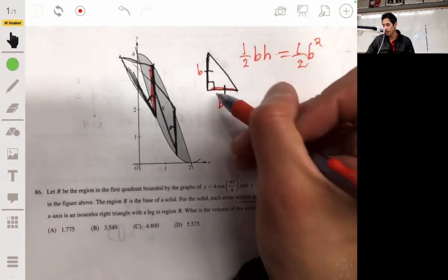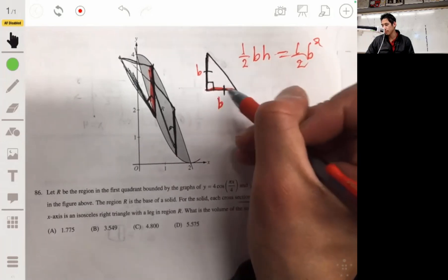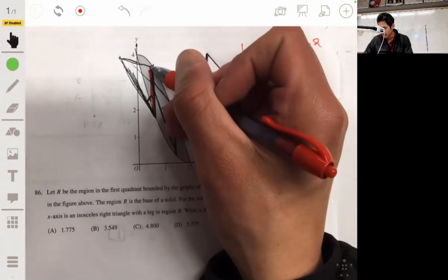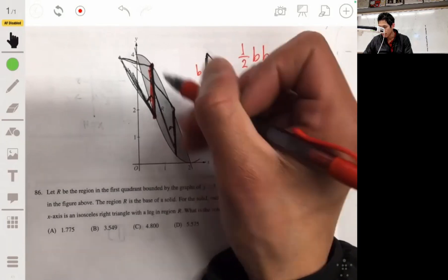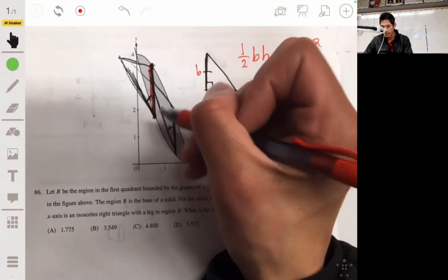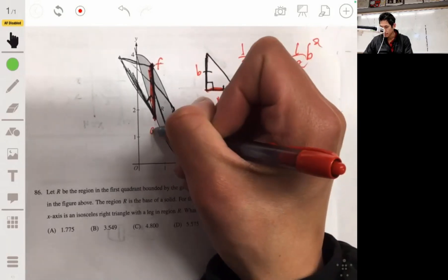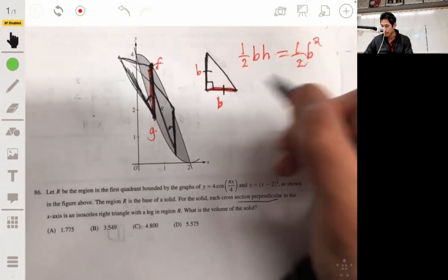So we need to find a way to represent B. B is this segment here, the distance from this line to this line, or this function minus this function. Let's call this F, let's call this G. So it's F(x) minus G(x).